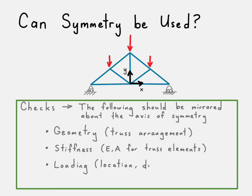Is the loading symmetric? The location and the direction and the magnitude? And then finally, are the constraints symmetric?